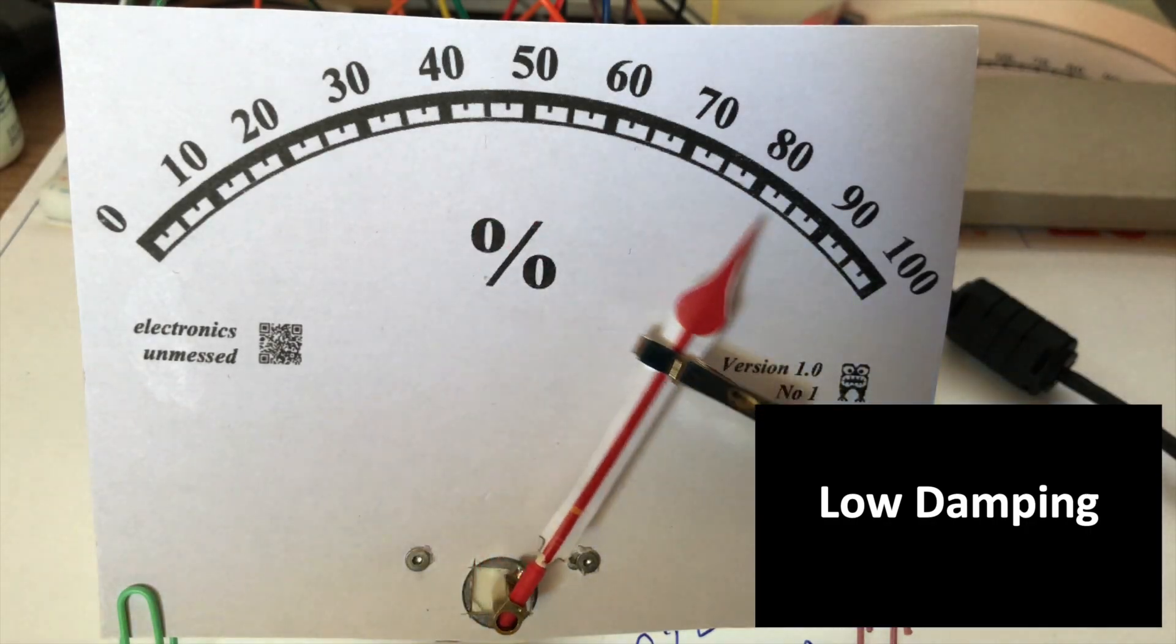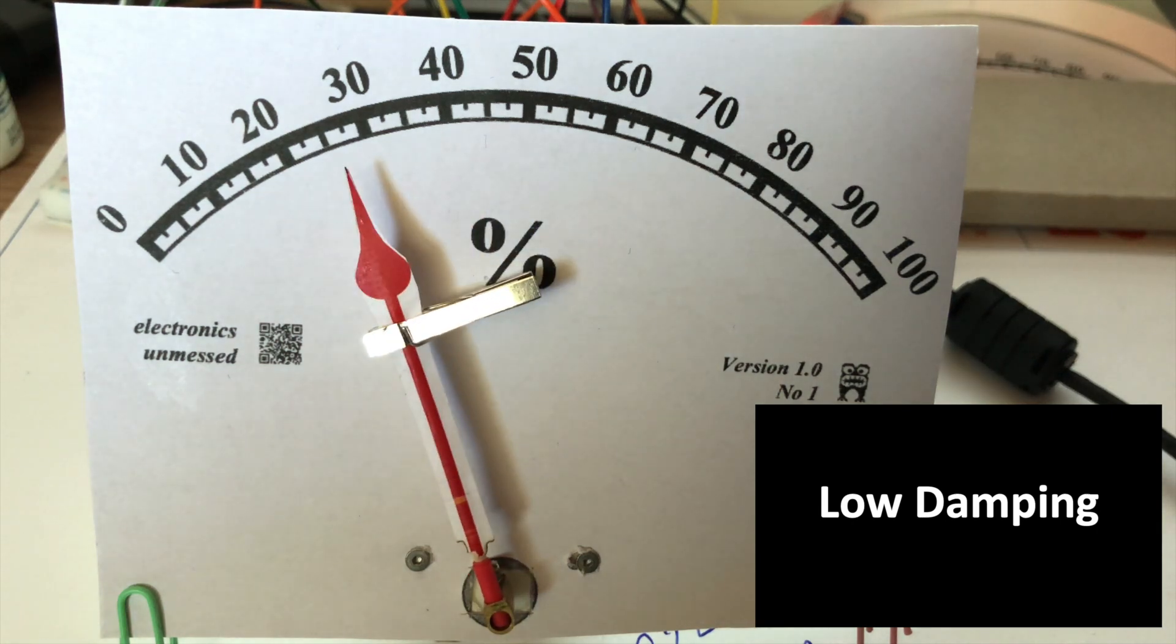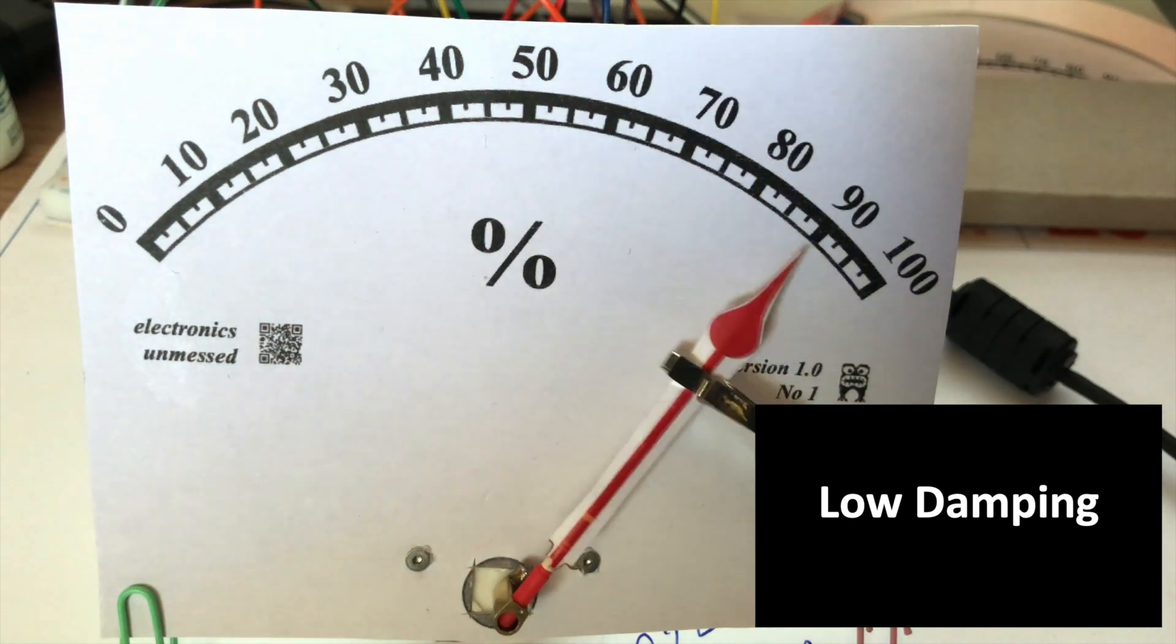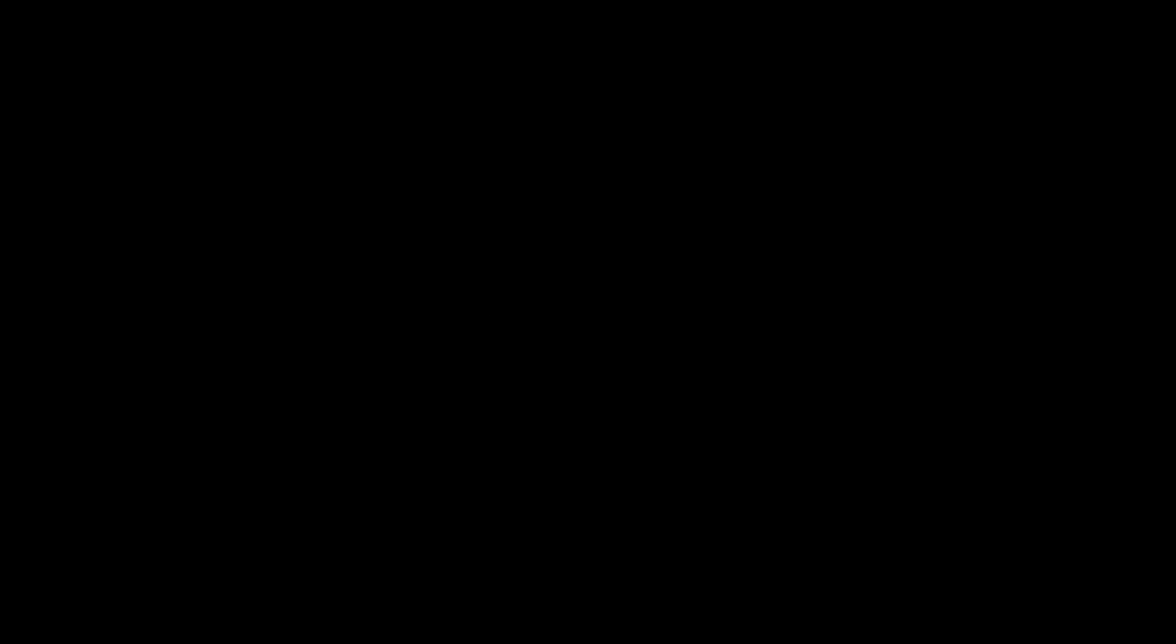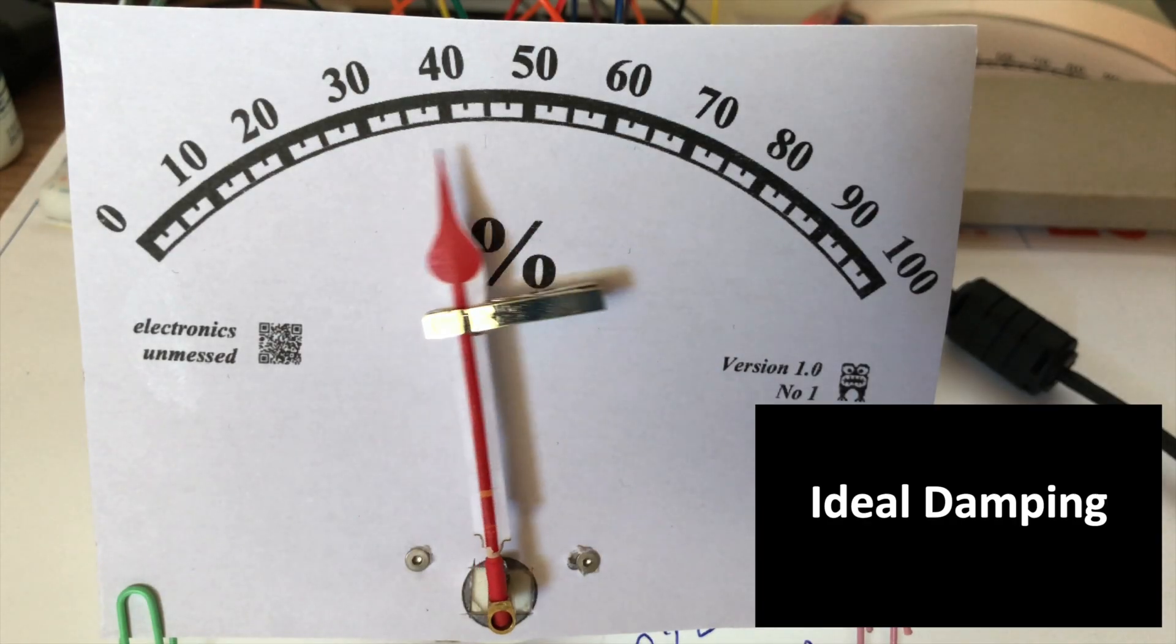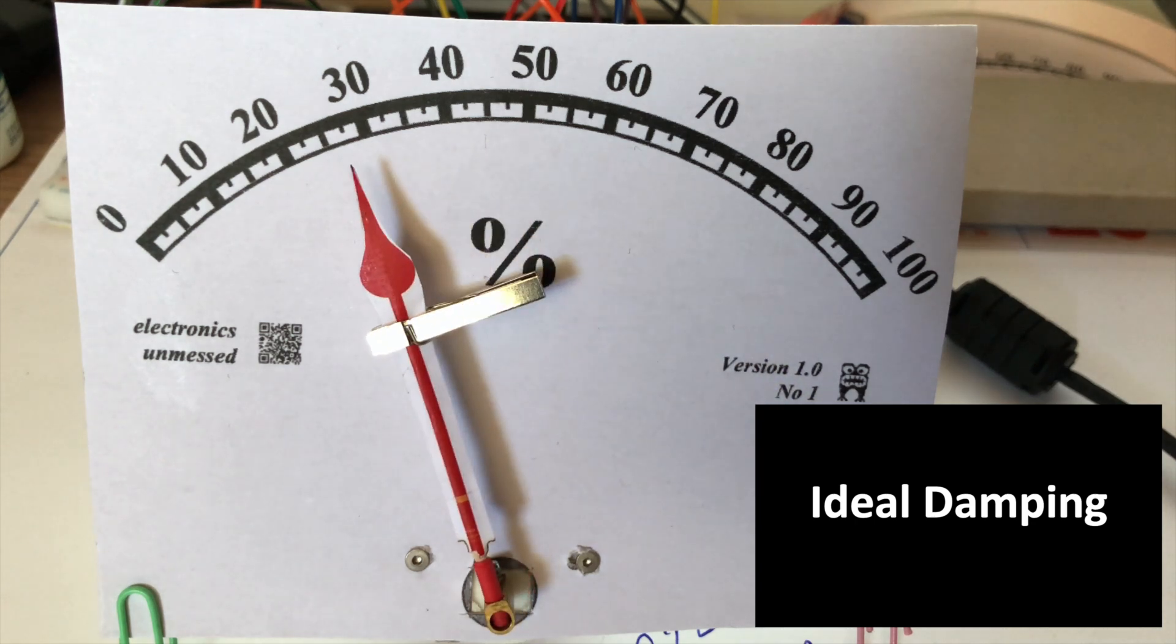In the second test, we see the pointer with slight damping, resulting in little overshoot. Third, we see the pointer with ideal damping. The pointer sweeps exactly to the measured value without any overshoot.